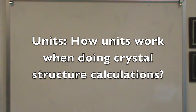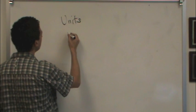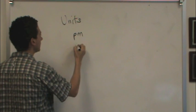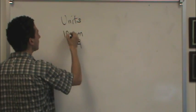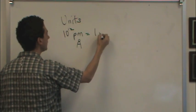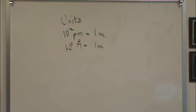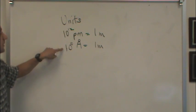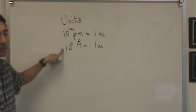One more thing you'll need to know while doing this is something about units. When working with crystal structures, we're going to work not with meters per se, but you'll be seeing picometers and angstroms. You need to remember that 10 to the 12 picometers is 1 meter, and 10 to the 10 angstroms is 1 meter. Picometer is the SI unit. Angstrom is a convenient unit because the length of a bond is approximately 1 to 3 angstroms.